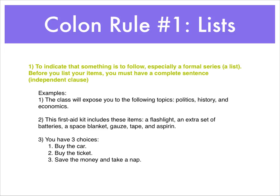So let's go back to rule number one, using colons to introduce a list. A list is usually when we have three or more items. And when we introduce a list, sometimes we do it with a complete sentence in front of it. That's the key — you must have a complete sentence or independent clause before your list in order to use a colon; otherwise, you leave it without punctuation. The first example is: 'The class will expose you to the following topics:' — notice this is a complete thought with subject 'class' and verb 'will expose.' Then we have our list: politics, history, and economics.